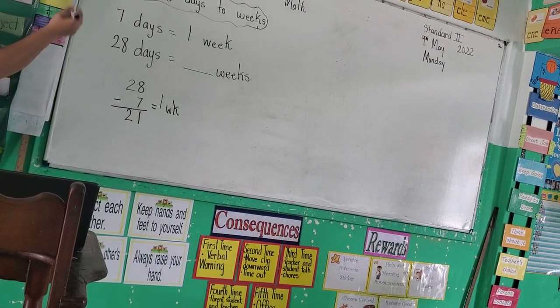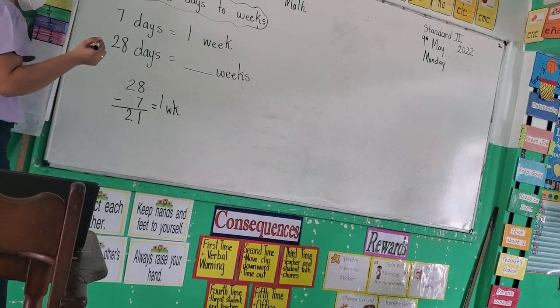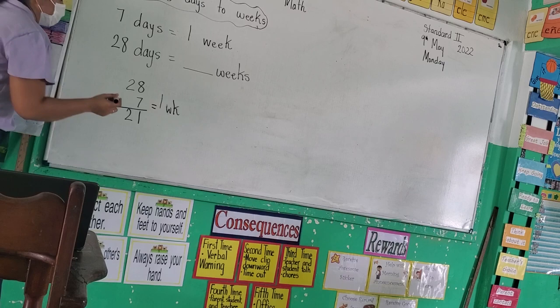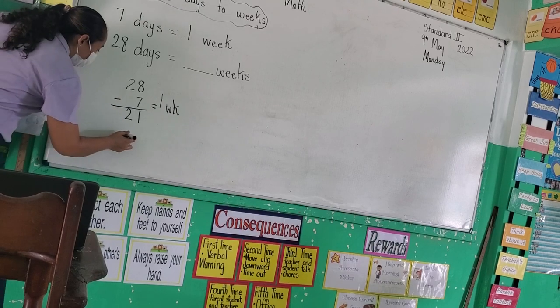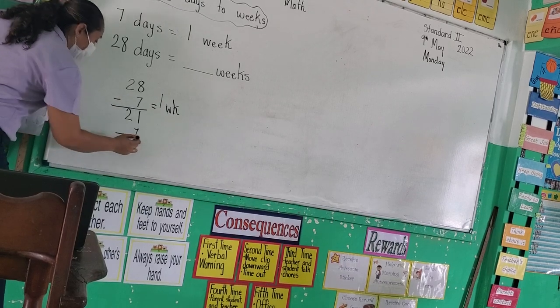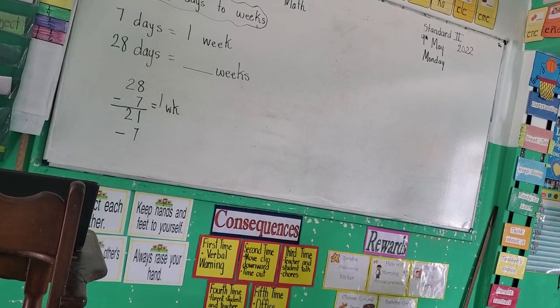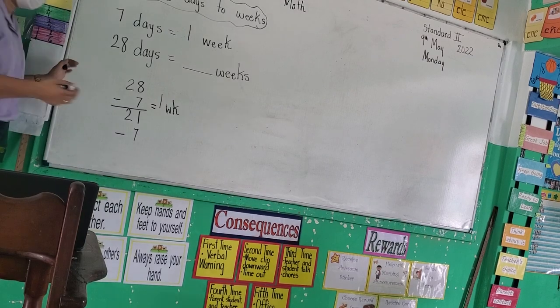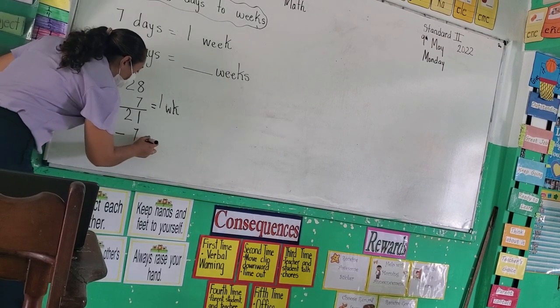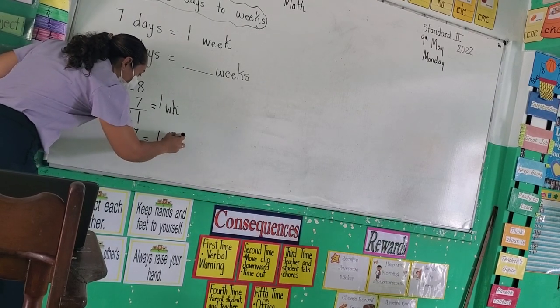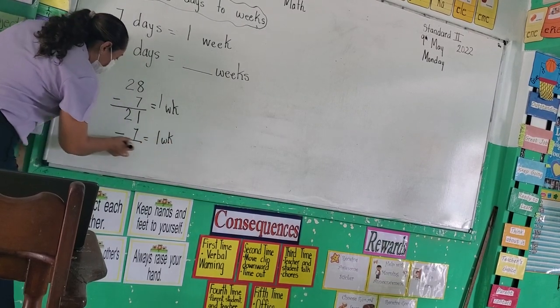So I subtract again. What will I subtract? Seven. And when I subtract seven, what do I write on the side? Equal one week. So I subtract.